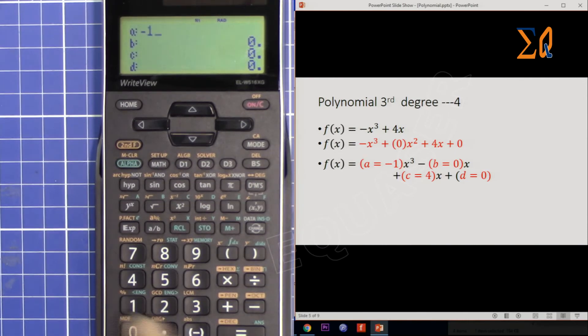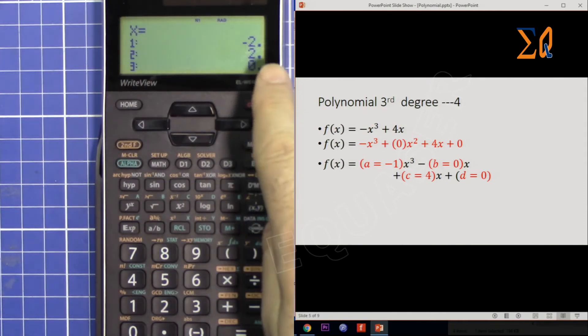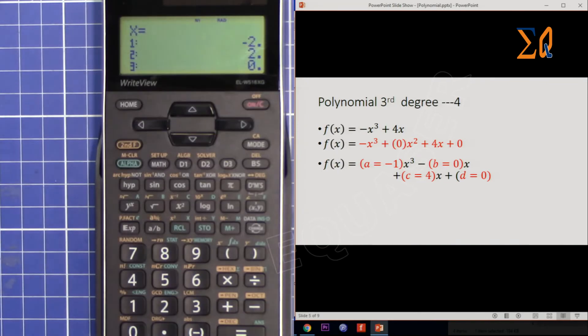Now you get 3 answers: x = -2, x = 2, and x = 0. So you got three answers for x.